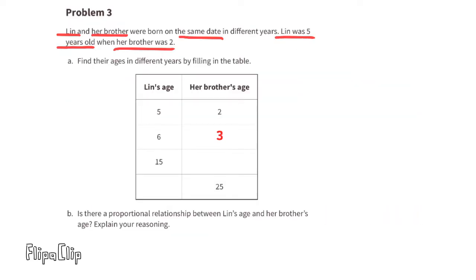Problem 3: Lynn and her brother were born on the same date in different years. Lynn was five years old when her brother was two. Part a — find their ages in different years by filling in the table. To find her brother's age, subtract three: 5 minus 3 is 2, 6 minus 3 is 3, 15 minus 3 is 12, and 28 minus 3 is 25. So when Lynn was 5 her brother was 2; when she was 6 he was 3; when she's 15 he'll be 12; and when her brother is 25, Lynn will be 28.